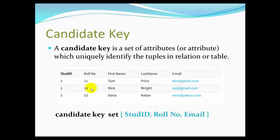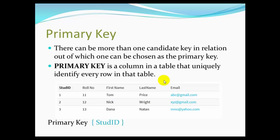Student id can uniquely identify a tuple, making it a candidate key. The candidate key is basically a set of attributes that uniquely identifies a tuple. Now, the primary key — out of all candidate keys, one is chosen as the primary key. The best option is chosen. There can be more than one candidate key, out of which one can be chosen as the primary key.